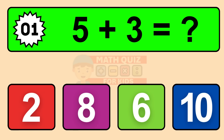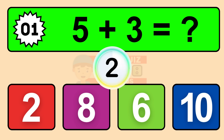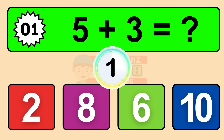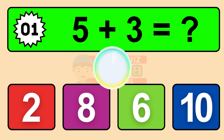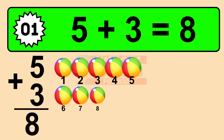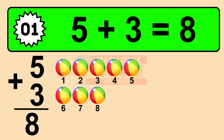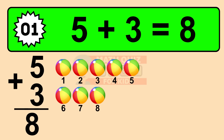Question one: five plus three equals what? The answer is five plus three is eight. Let's count it. One, two, three, four, five, six, seven, eight.